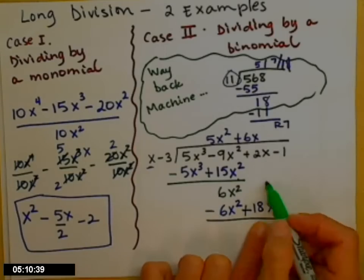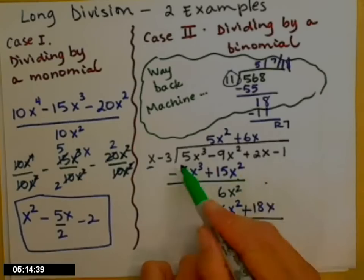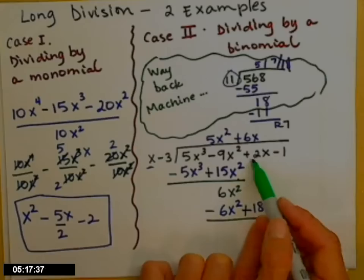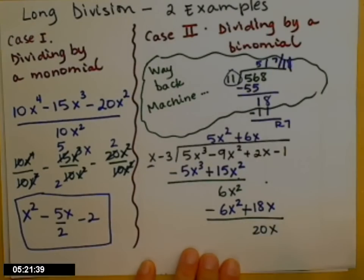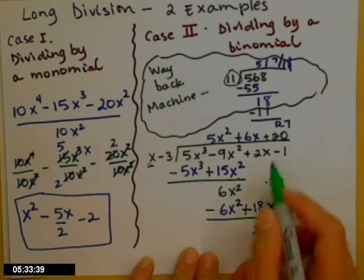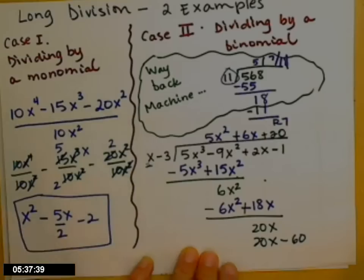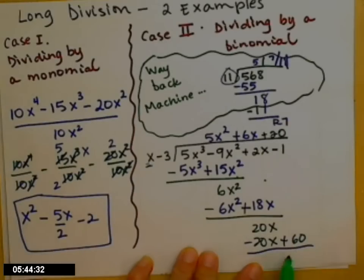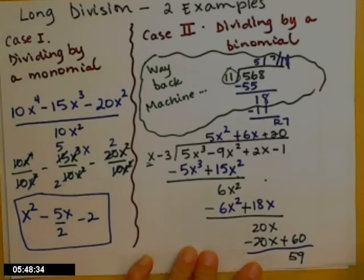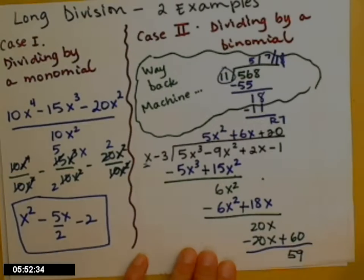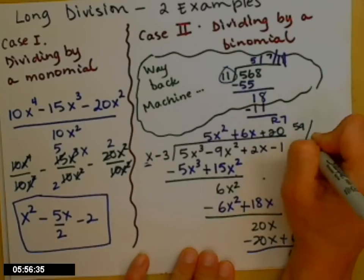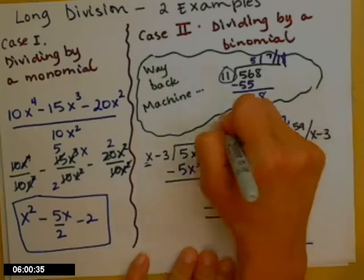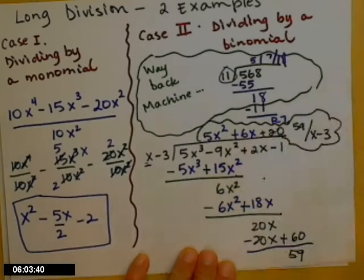Now I have 18x. I don't really bring down extra terms because it gets cluttered, so I look back up at the top line — I have a positive 2x, and adding the positive 18x gives 20x. One more time: x times what to get 20x? So plus 20. 20 times x is 20x, and 20 times negative 3 is minus 60. Change signs and add — 60 and negative 1 gives a positive 59 for our remainder. So the answer is the quotient plus 59 over (x minus 3).